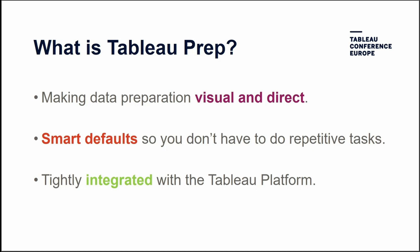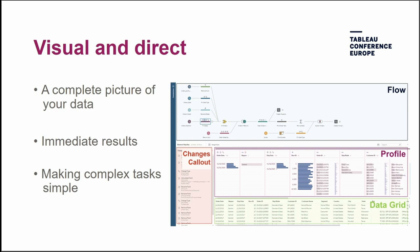The flow and profile panes as well as the data grid give you a complete picture of your flow end-to-end as well as the underlying rows of data. You can interact directly with the profile pane to filter values, create groups, and make changes to the data and instantly see the results even on millions of rows. By far my favorite thing about Prep is the visual cues that make those complex tasks really simple — it's the thing that would have saved me hours during that internship trying to understand the difference between an inner and a left join.